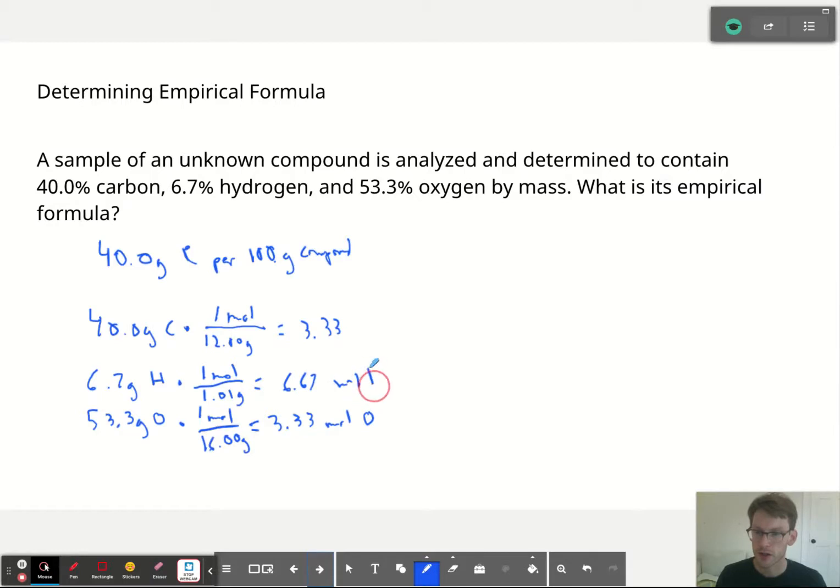It's the moles that will tell us the ratio of numbers of atoms in the compound. So we have 1 mole over 12.00 grams. We have times 1 mole over 1.01 grams. And we have times 1 mole over 16.00 grams. And what we get is we get 3.33 moles of C, we get 6.67 moles of H, and we get 3.33 moles of O. Just looking at these it starts to become clear what the empirical formula should be. You can see a ratio here. 3.33 to 3.33 is just 1 to 1. For every carbon or oxygen we have 2 hydrogens.